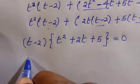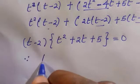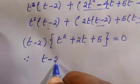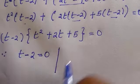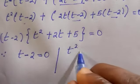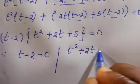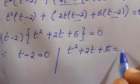Then there are two possible things here. We have t minus 2 equals 0, or we have t square plus 2t plus 5 equals 0.